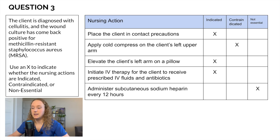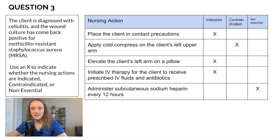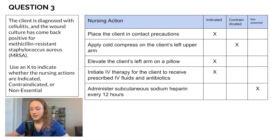For question three: placing the client in contact precautions is indicated, because MRSA requires contact precautions. Applying a cold compress on the left upper arm is contraindicated — as edema builds up, it can compress the nerves and blood vessels, causing numbness, tingling, and diminished left radial pulse. Adding cold would further constrict blood vessels and worsen those symptoms. If anything, we would use warmth to bring more blood supply to the tissue. Elevating the client's left arm on a pillow is indicated to help decrease edema and swelling.